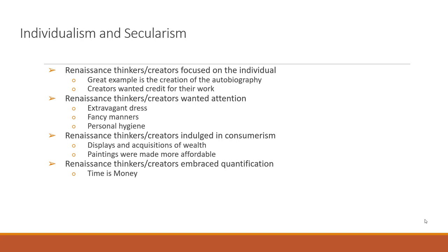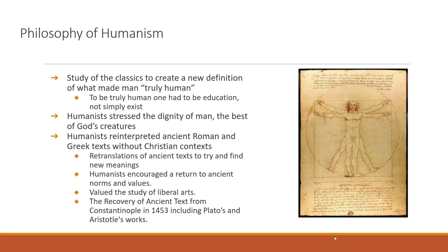Renaissance thinkers embraced quantification—for example, quantifying time: if you were exerting energy into a project like painting, you recognized that time is money. Secularism is also important—not so much focused on religion, but on being part of the secular world, buying things and displaying wealth. This moves us to another key characteristic: the philosophy of humanism. Humanism is the study of the classics to create a new definition of what made man truly human. To be truly human, one had to be educated.